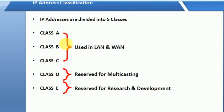There are five IP address classes: Class A, Class B, Class C, Class D, and Class E. Classes A, B, and C are used for regular network addressing. Class D is reserved for multicasting and Class E is reserved for research and development.